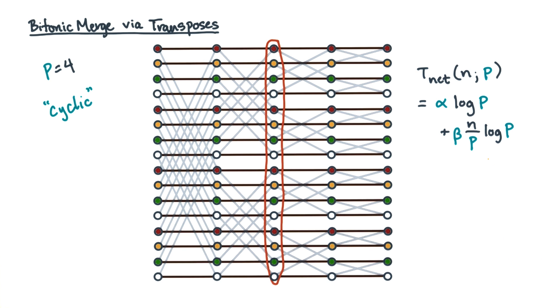Looking at these terms, you might worry about the beta term. If n over p is really large and the beta term dominates the alpha term, then it looks like you're paying to send n over p words log p times. A natural question is, is there an alternative that would let you reduce the cost of the beta term, possibly at the cost of increasing the alpha term?